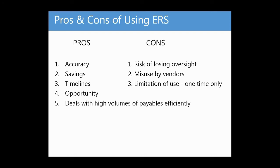If the vendors come to know that you use the ERS process, there is a risk of misuse. This will become a little more clear as you understand the process itself later on. And there is a limitation — although in some ways it is not — you can do an ERS only once. If for any reason you have to reverse that document, you do not have a choice left. You cannot do an ERS again. You have to necessarily do a MIRO as a second step.